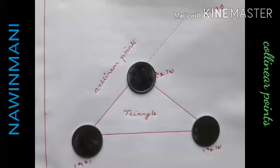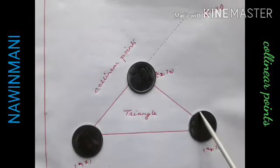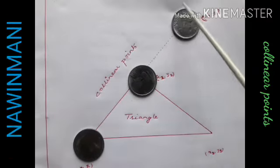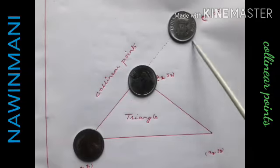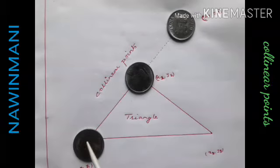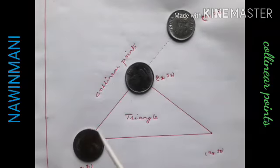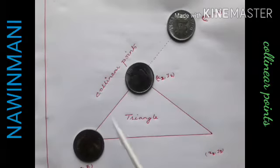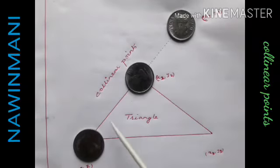For example, suppose I arrange the points in a straight line. When three points lie in a straight line, these are called collinear points. Lying on the same line means collinear points.